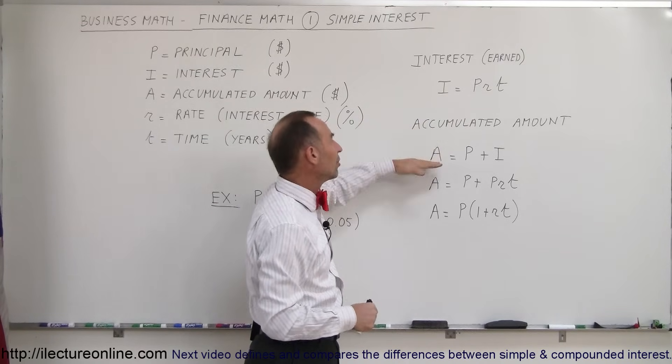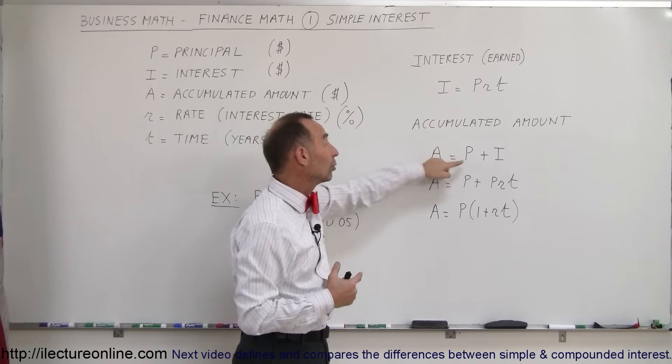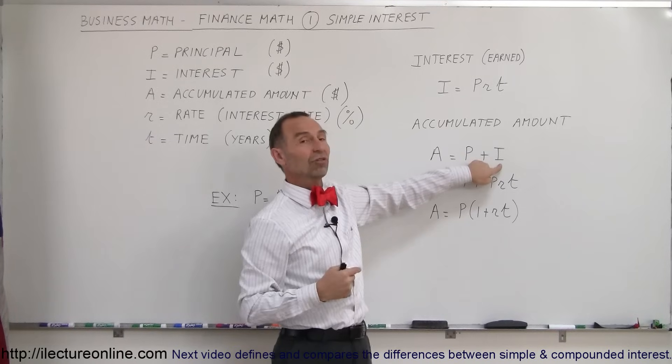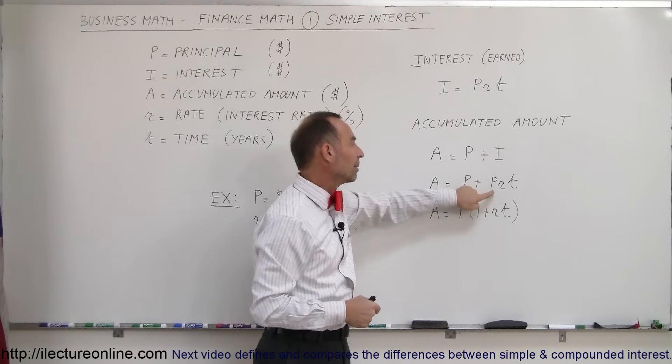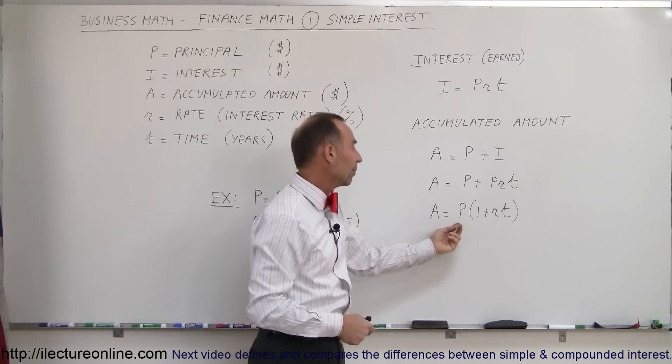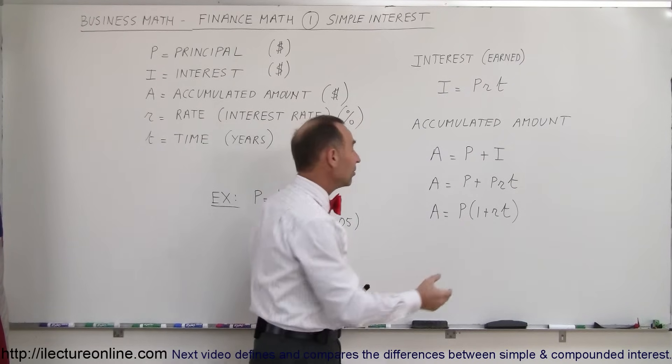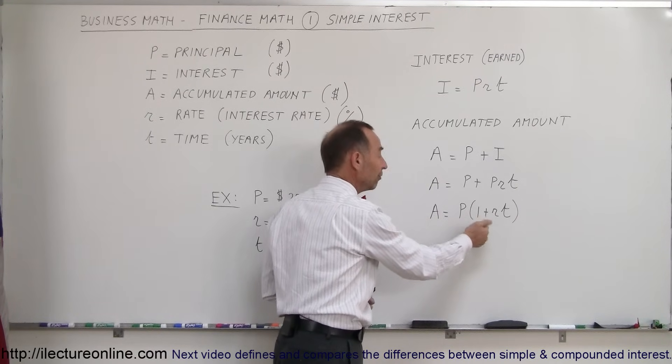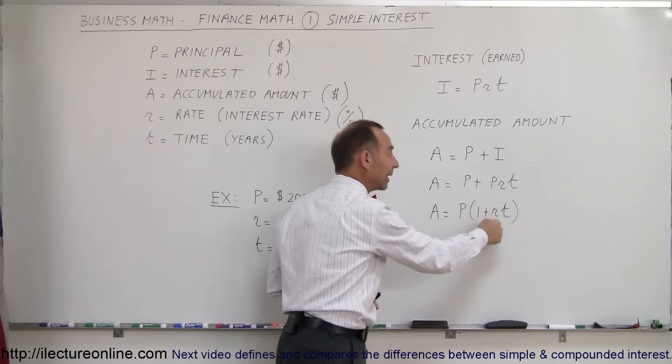The accumulated amount is the amount that you end up with at the end, which is equal to the principal you invested, which of course you'll get back, plus any interest that you earned. And since the interest that we earned is going to be equal to PRT from our definition, we can then factor out the P, the principal. So that means the accumulated amount will be the principal times the quantity one for the initial principal plus the rate times the time. A = P + I, A = P + PRT, A = P(1 + RT).